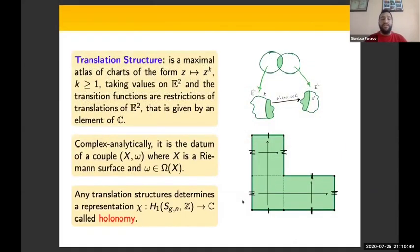How do we prove this result? We adopt a geometrical point of view, and I need to introduce translation structures. If you are familiar with the language of geometric structures, this kind of definition is not difficult. A translation structure is a maximal atlas of charts of the form z ↦ z^k, where k ≥ 1, taking values on ℝ² and the transition functions are translations of ℝ², that is, given by an element of C.